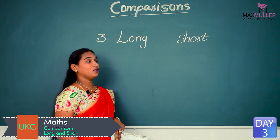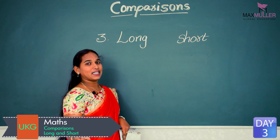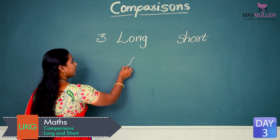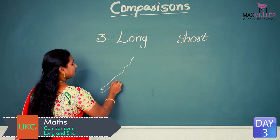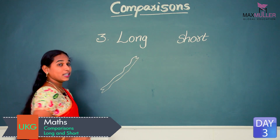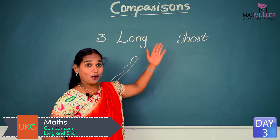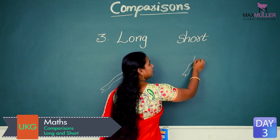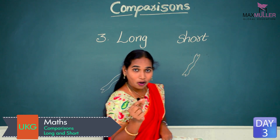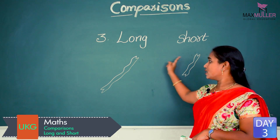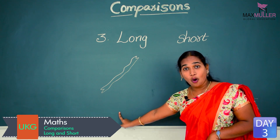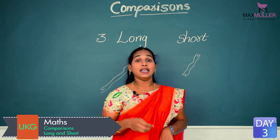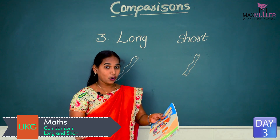Here we will go with a few more examples. Here I am drawing a ribbon — see the ribbon, it is too long. See another one here — this ribbon is too small, so it is short. Compare these two: this one is too long, this one is short.